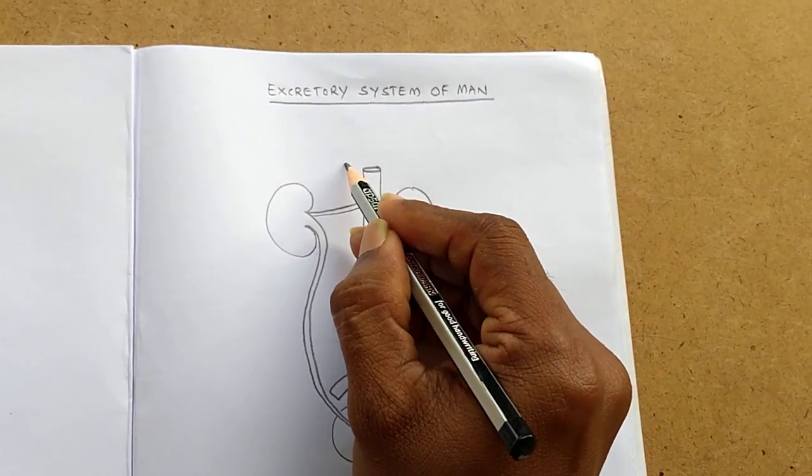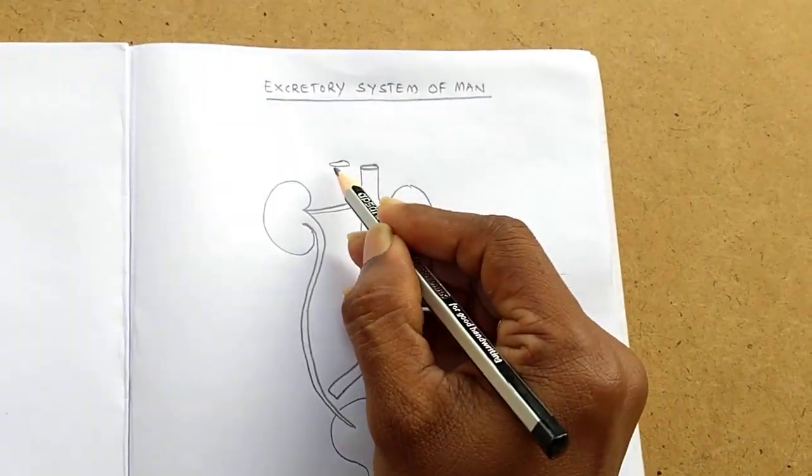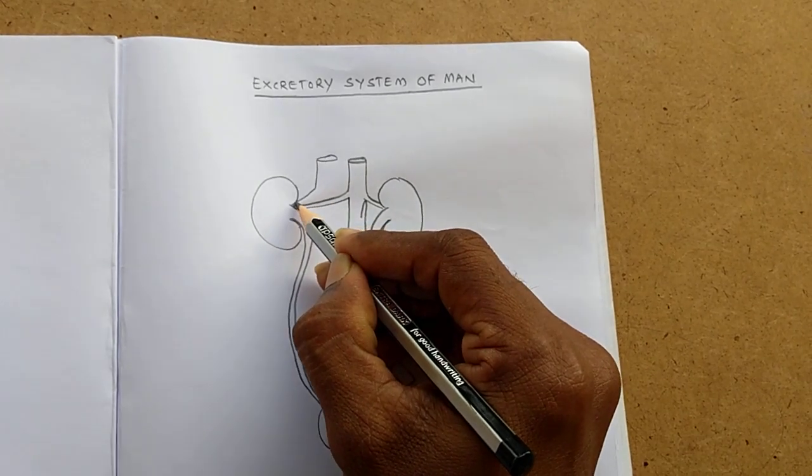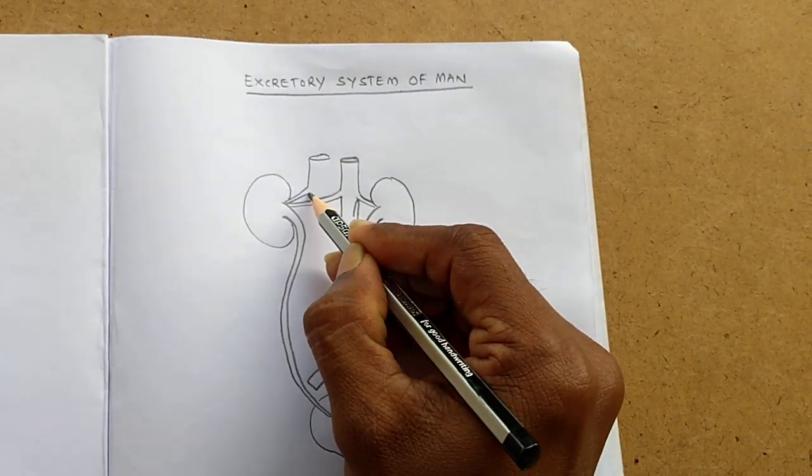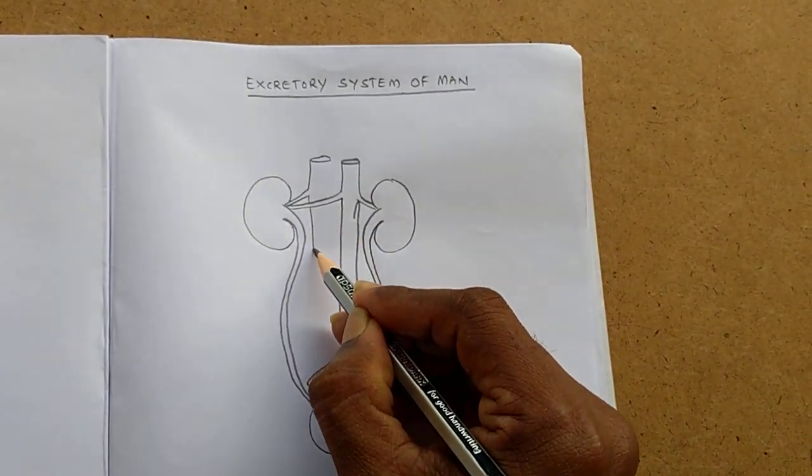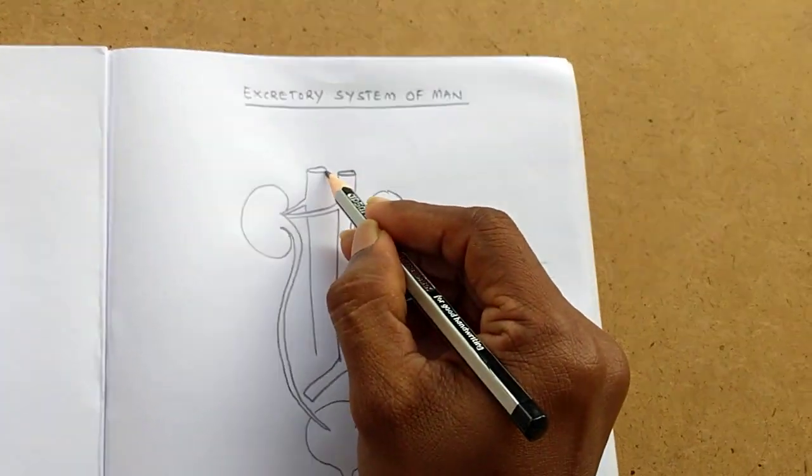Inferior vena cava - from this also we have to draw the branches to both kidneys.